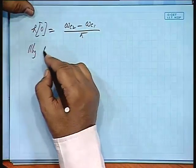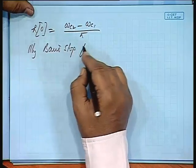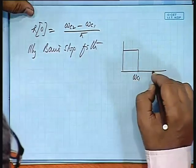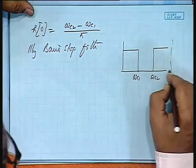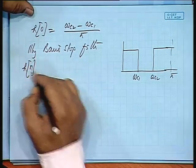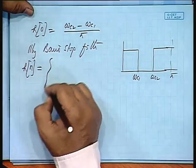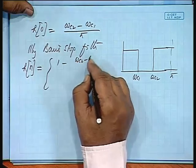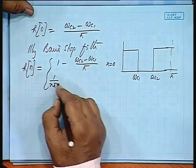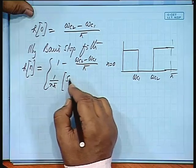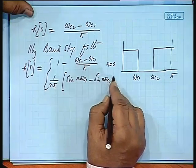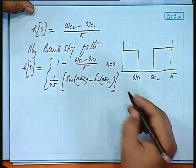Similarly, for a band-stop filter with pass-bands from minus-pi to minus-omega_c2 and from omega_c1 to pi, H(0) equals 1 minus (omega_c2 minus omega_c1)/pi, for n equal to 0. For n not equal to 0, H(n) equals [sin(n·omega_c1) minus sin(n·omega_c2)] divided by (n·pi).